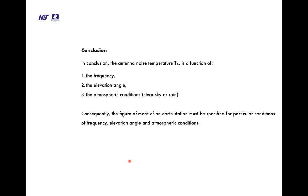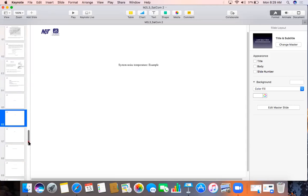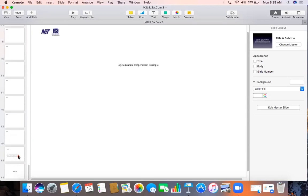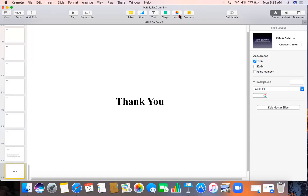In conclusion, the antenna noise temperature T_A is a function of frequency, elevation angle, and atmospheric condition — whether clear sky or rainy. Consequently, the figure of merit of an earth station must be specified for particular conditions of frequency, elevation angle, and atmospheric conditions. These are the references, and we conclude today's session.